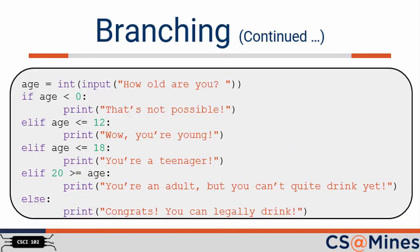We suggest you pause the video on this example and consider what is printed with different input numbers. I like this example as it illustrates how you can make assumptions from previous conditions failing. For example, you don't have to include the condition greater than 12 in the 'you're a teenager' branch, as you can assume the age is greater than 12 if this branch is executed. You may also want to type this code into a Python file and execute it.